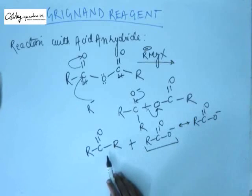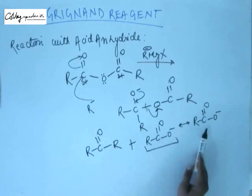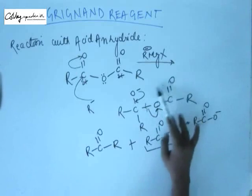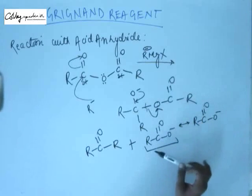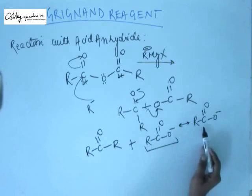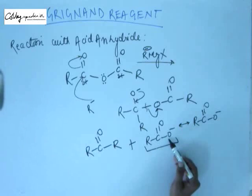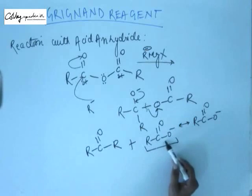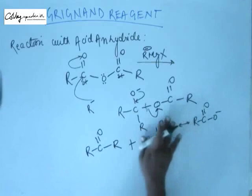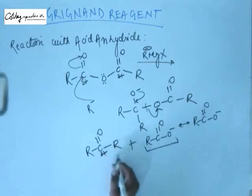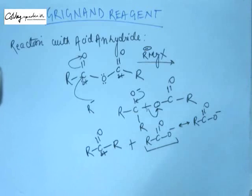This ketone is now regenerated. It is only possible to remove this group because the carboxylate is a stable group — it can leave the substrate and have an independent existence. This carboxylate will not participate in the reaction further because it already has a negative charge, and the Grignard reagent, also being electron-rich, will not approach this negatively charged electron-rich species. The reaction with this part is over. The ketone remains electron-deficient with a partial positive charge on carbon.